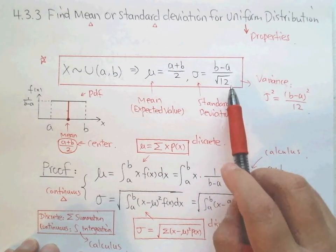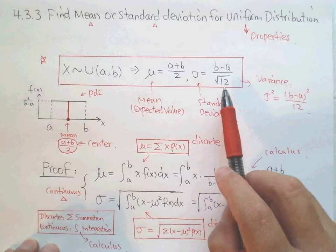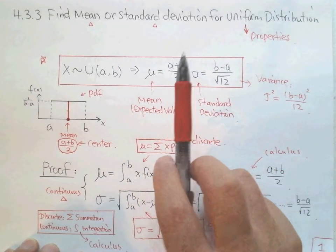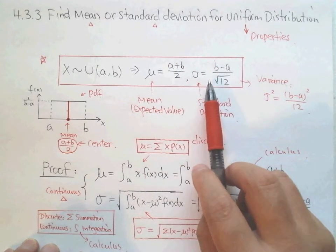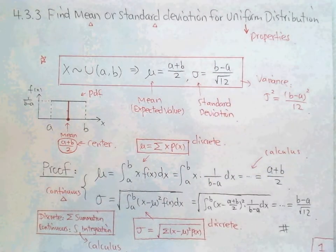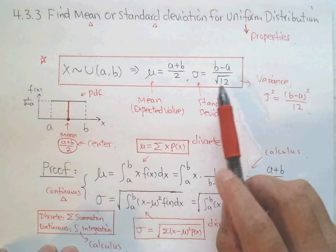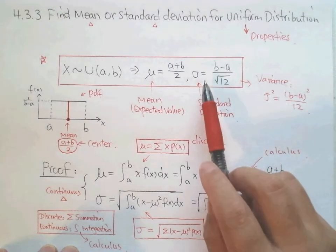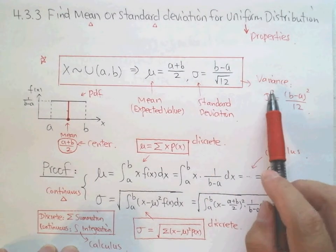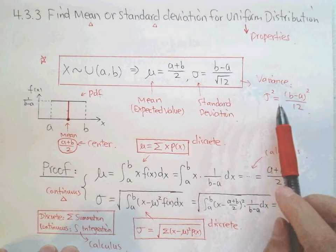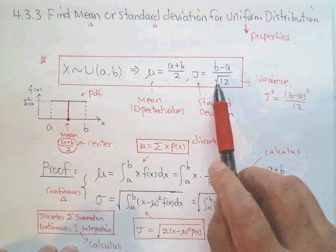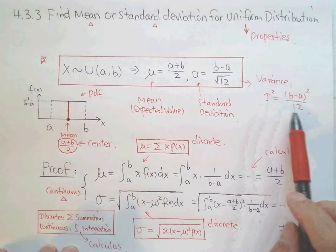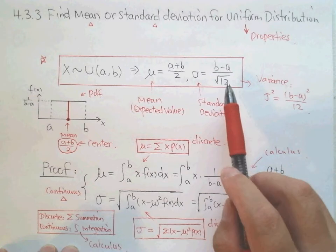So look, 12 is very strange, right? The mean tells you the expected value, or the average, or the center. Standard deviation tells you the spread of your distribution, or the variance of your distribution. What is the variance, which is the square of the standard deviation? So square of sigma goes to the top square, the bottom square, which is B minus A square on the top. The bottom is 12, square root of 12 squared, which is 12.